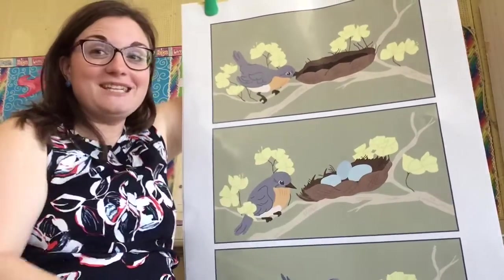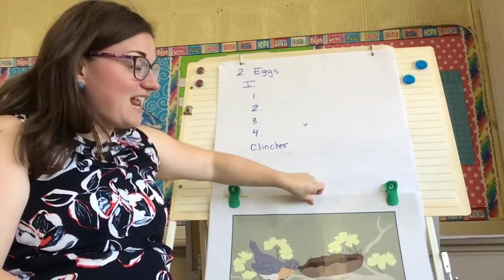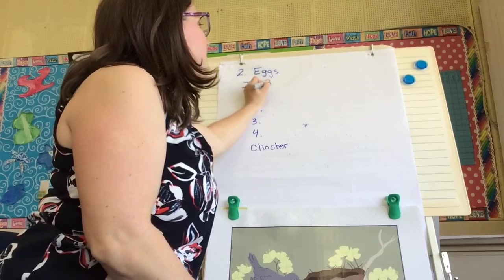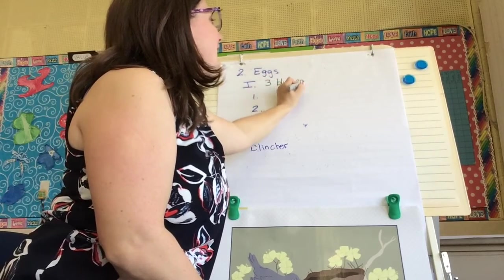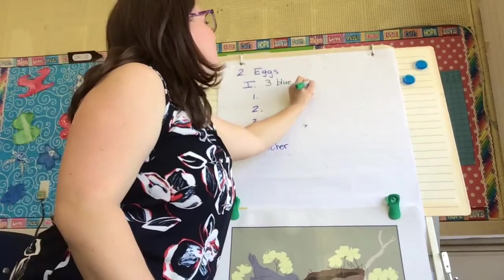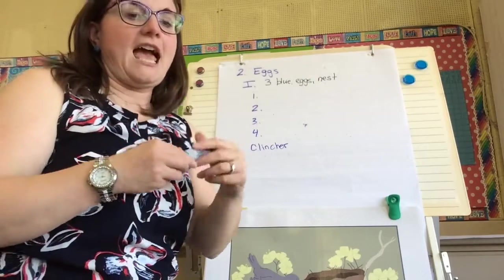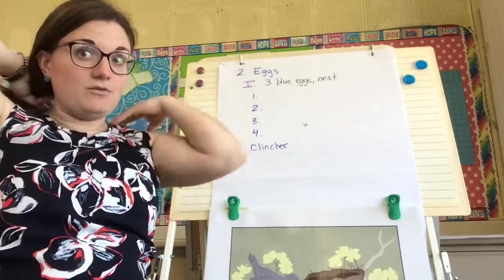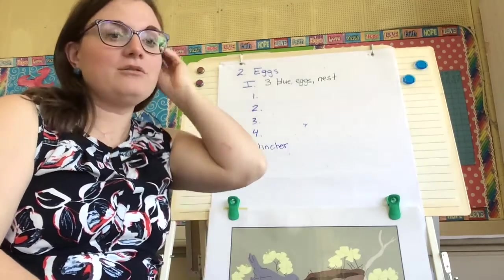What do you see in my picture? I see three blue eggs in a nest. I'm going to put that down — three blue eggs. That's exactly what we see in the picture. Now let's continue our story — how do these blue eggs get here?